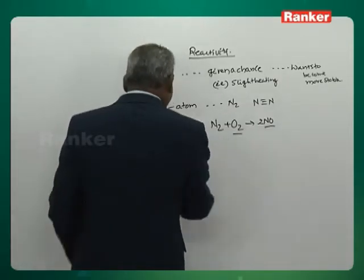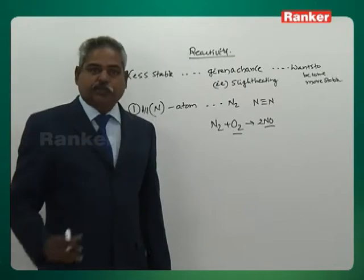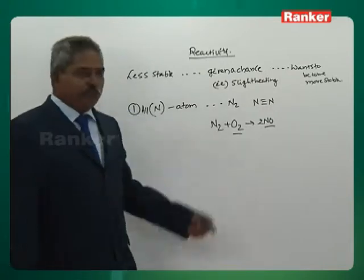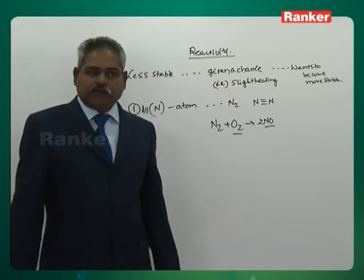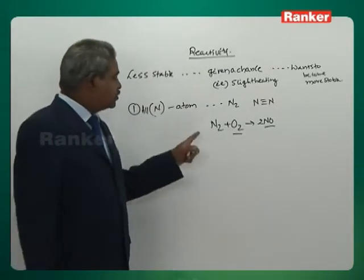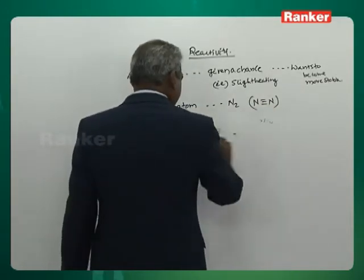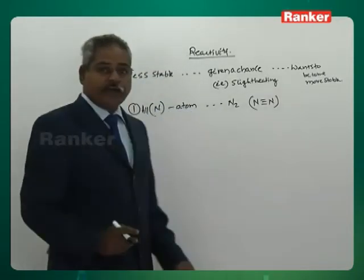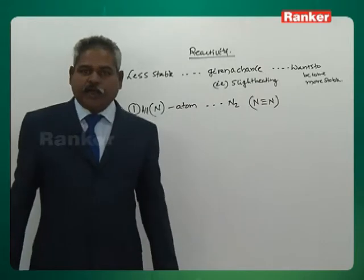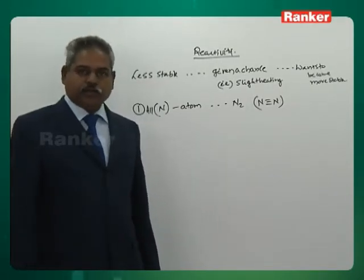This reaction takes place only at 3,000 degrees centigrade or 3,000 volts — very high voltage. Only when lightning occurs does nitrogen combine with oxygen, and it happens only in the upper atmosphere. You won't find a single molecule of NO in this room because you don't have that kind of voltage. So all nitrogen atoms want to become N2 because the N≡N triple bond is very, very strong and can't be broken easily. Nitrogen is a less reactive gas — more or less like a noble gas.